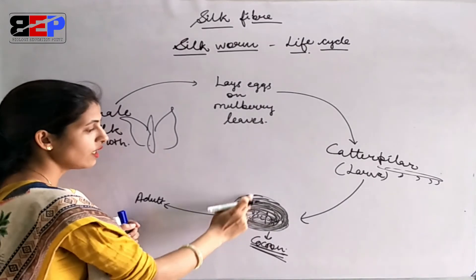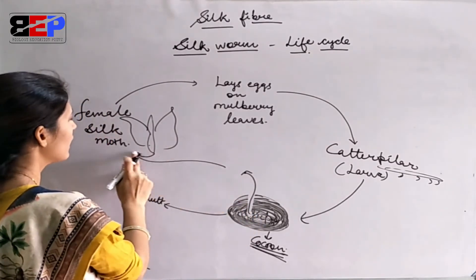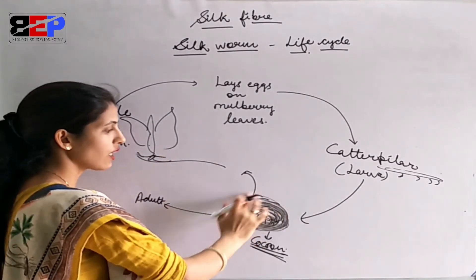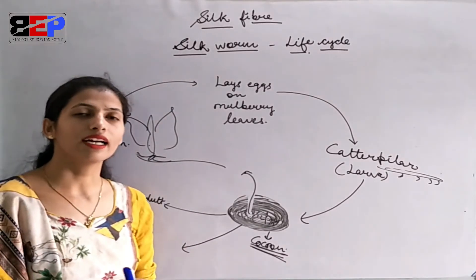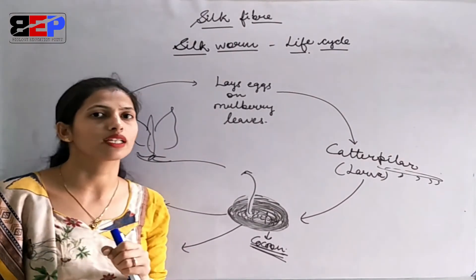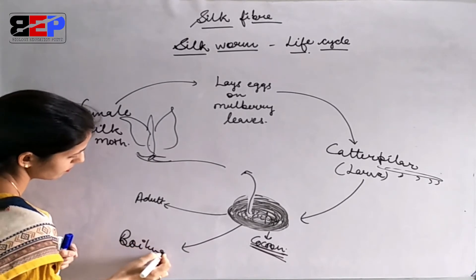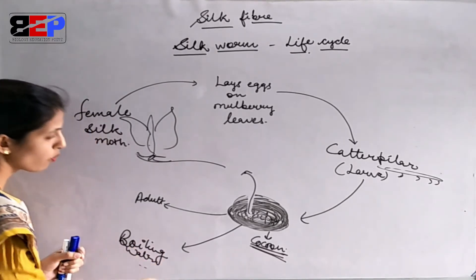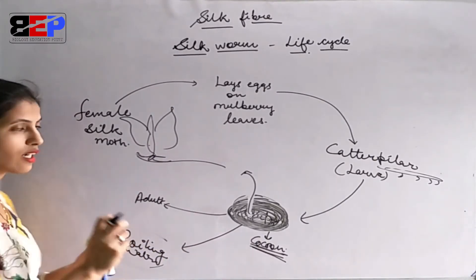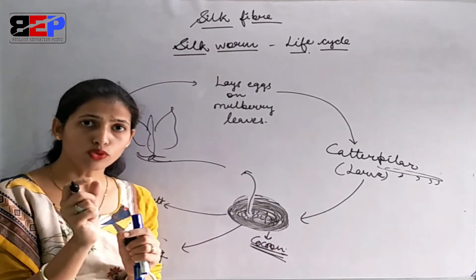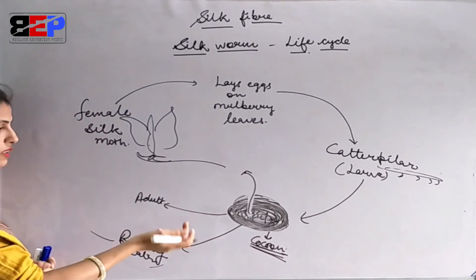The adult is converted and it will cut the cocoon and be removed. After the adult comes out of the cocoon, we collect the cocoon to obtain silk. This cocoon is treated with boiling water so that the structure becomes soft and the threads of the cocoon can be removed.